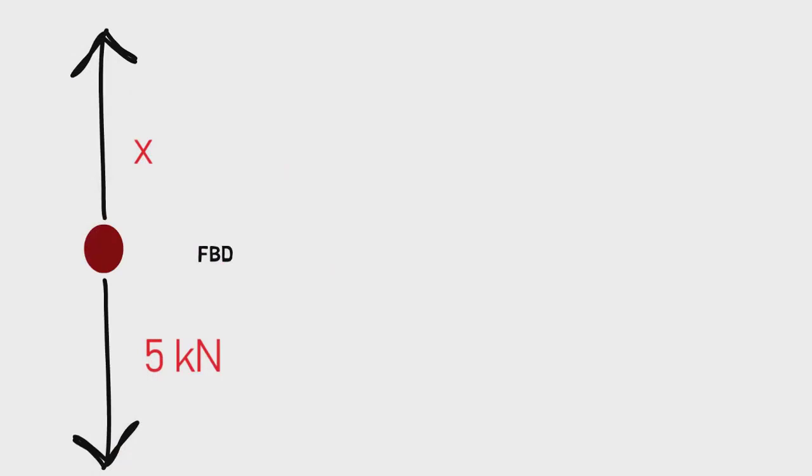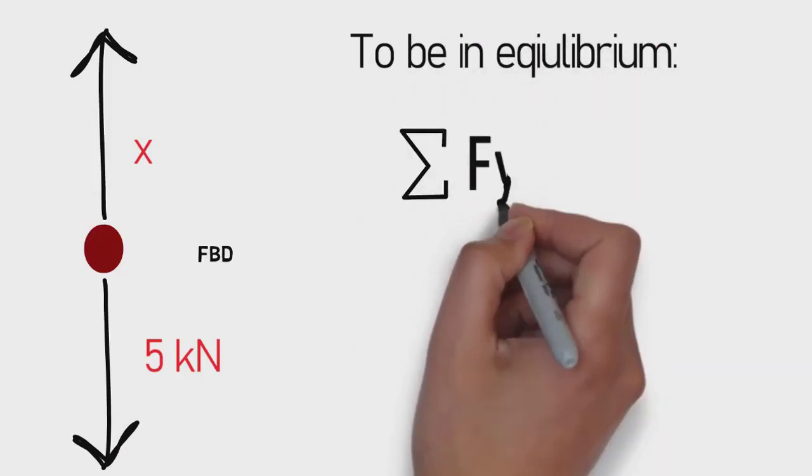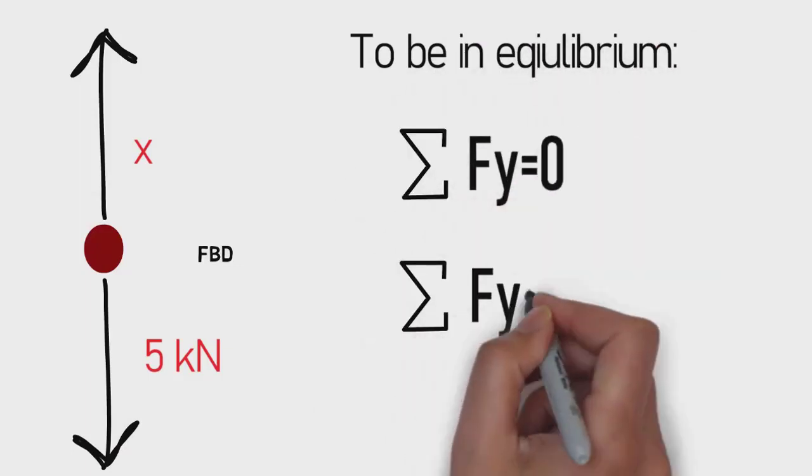By the way, a free body diagram is a drawing that shows the particle with all forces that act on it, which simplifies our job. It was said that the particle is at rest, so it must satisfy equilibrium condition.